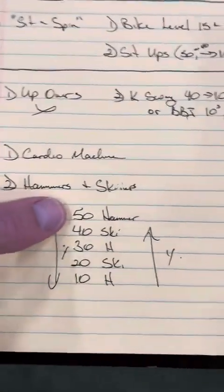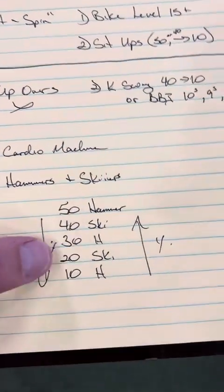Station 5, person one will be in the back on a cardio machine. While person two rocks down the 50, 40, 30, 20, 10, 50 hammers, 40 skiers, 30 hammers, 20 skiers, 10 hammers.